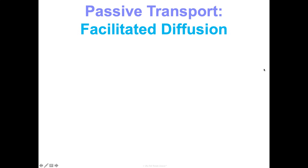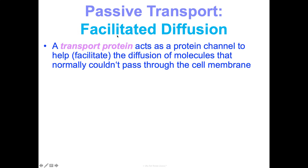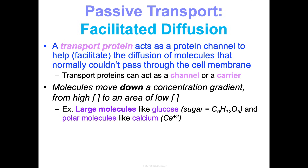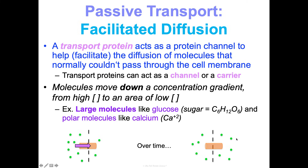Facilitated diffusion: simple diffusion just happens on its own, but facilitated diffusion needs a little bit of help. A transport protein acts as either a protein channel or a carrier, and it helps facilitate the diffusion of molecules that normally can't get through the cell membrane. It still moves molecules down the concentration gradient from high to low, but it helps bigger molecules like glucose and polar molecules that have a charge, like calcium. Over time, we'll have that nice balanced concentration.